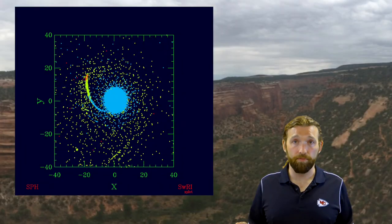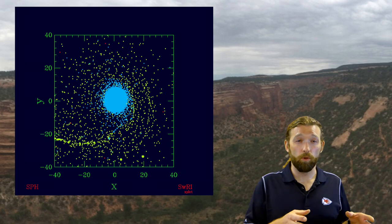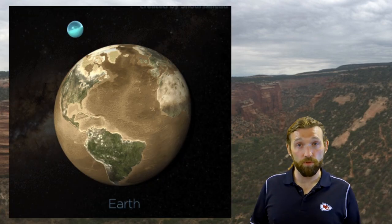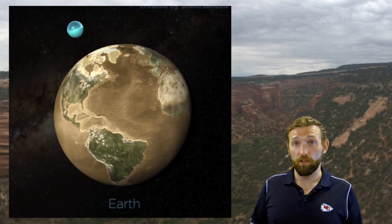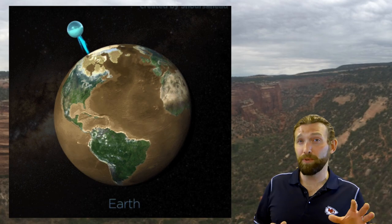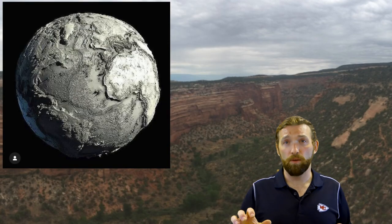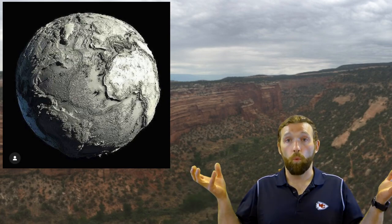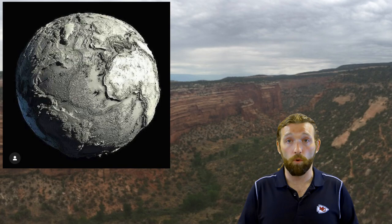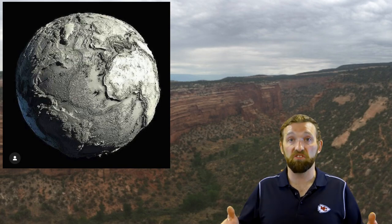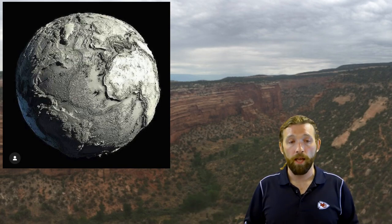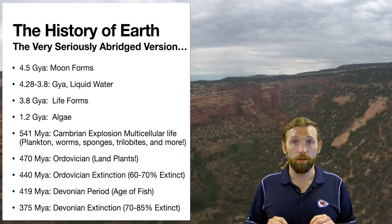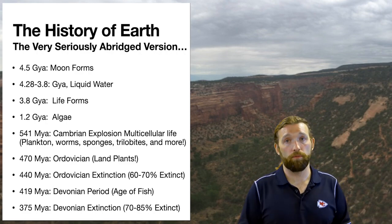About half a billion years later, the Earth cools enough to start forming liquid water. That's kind of contested — some geologists will say 4.28 billion years ago we had liquid water, and some will say 3.8 billion. Regardless, somewhere in that time the Earth cools enough that water is able to go from vapor to liquid form and we start to form ponds, oceans, and so on.